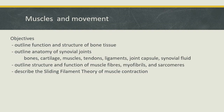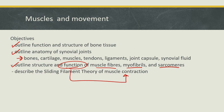Our objectives are to outline the function and structure of bone tissue, the anatomy of synovial joints, and the structure and function of muscle fibers, which are made up of myofibrils, which are made up of sarcomeres. One of the functions of these pieces and parts is muscle contraction, so we're going to talk about the sliding filament theory of muscle contraction.